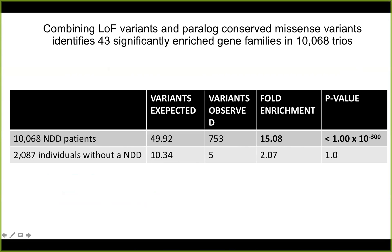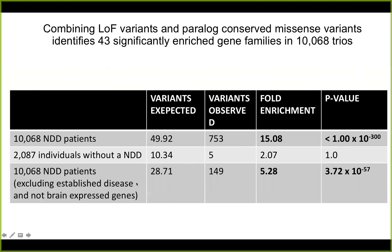As a sanity check, we also have data from 2,000 trios without neurodevelopmental disorder, and here we don't see any enrichment when we look at these 43 gene families. Many of you might wonder whether the signal we see is driven by novel genes individually contributing a little, or by single known genes dominating the gene family signal. Indeed, if we look at these families, we see that in most families there is one major contributor — the single gene with the most variants. However, if we remove all established disease genes, we still see a 5-fold enrichment in our gene family genes, showing that there is contribution from other genes that are not yet statistically significant at the individual gene level.